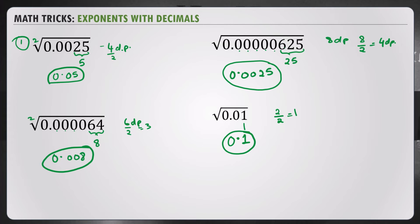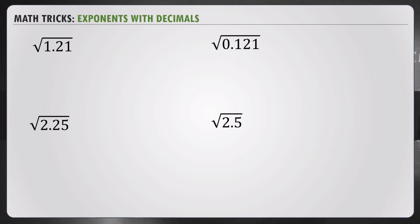But, let's carry on. What if you have 1.21? Not just 0 in the beginning. Okay, we know 121 works out to 11. And we have 2 decimal places divided by 2 should give me 1. So, we need 1 decimal place. The answer is 1.1.